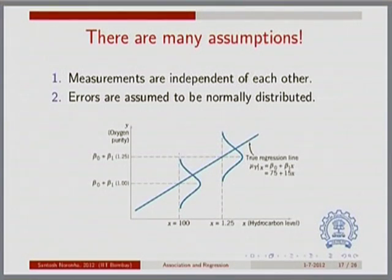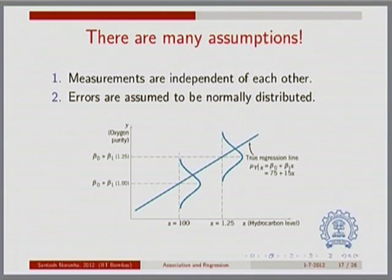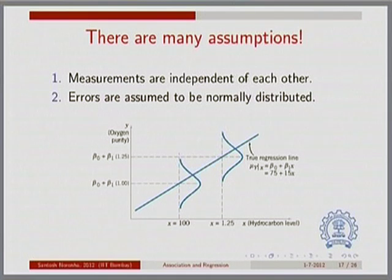Second, it is also assumed that your errors are normally distributed. When we looked at the scatter of data at a given value of x, we took a Gaussian distribution turned on its side to demonstrate expected scatter, with the most probable value being a point on the line. In several situations the errors may not be normally distributed. You need to collect your measurements, plot them on either side of the proposed line, and ask whether there is a skew — more measurements falling on one side at a given value of x. If there is a skew, you are probably not justified in using a least squares approach.